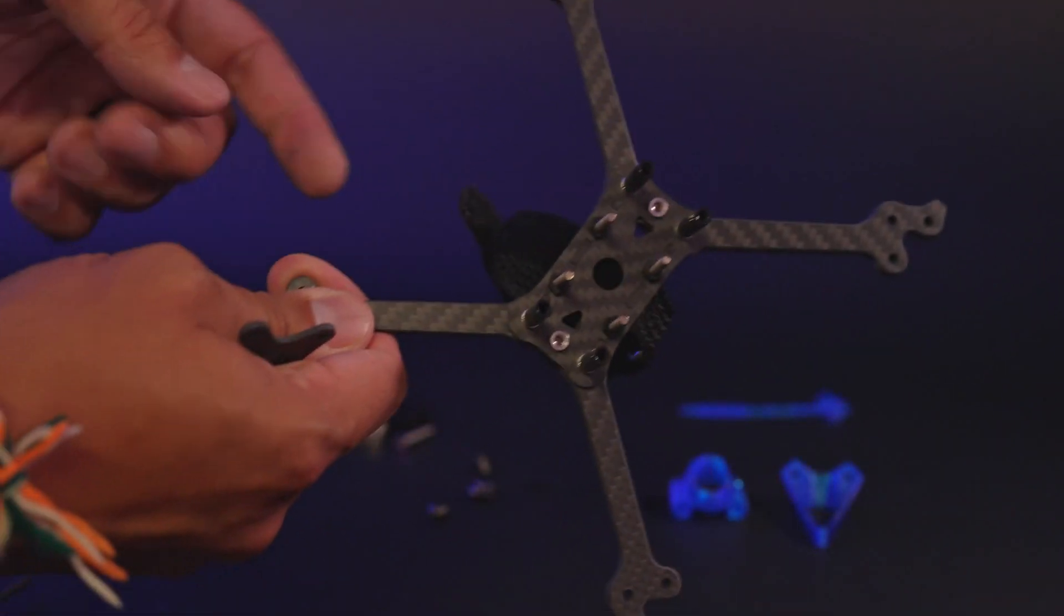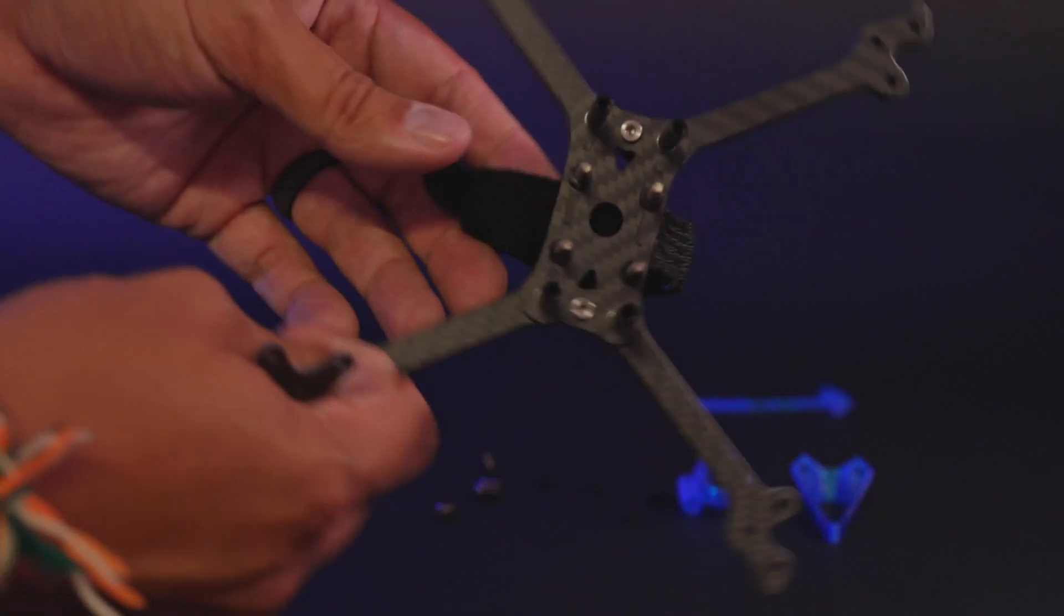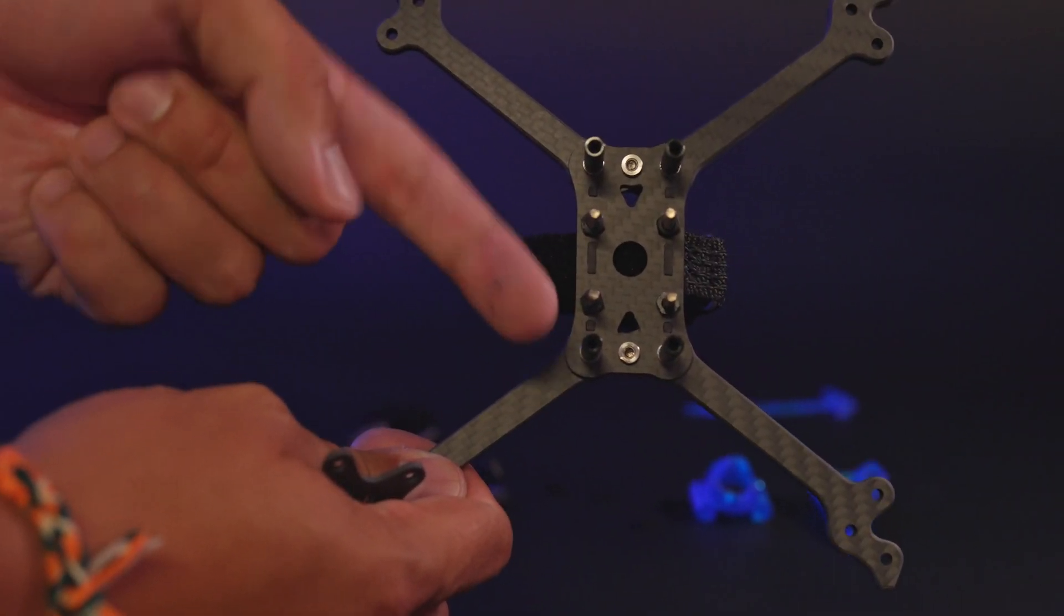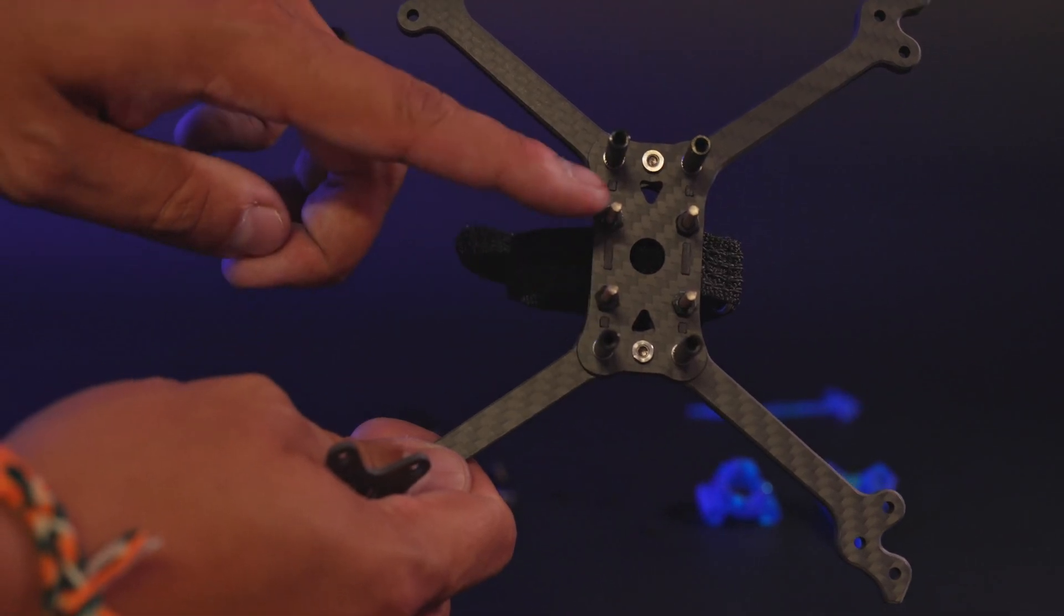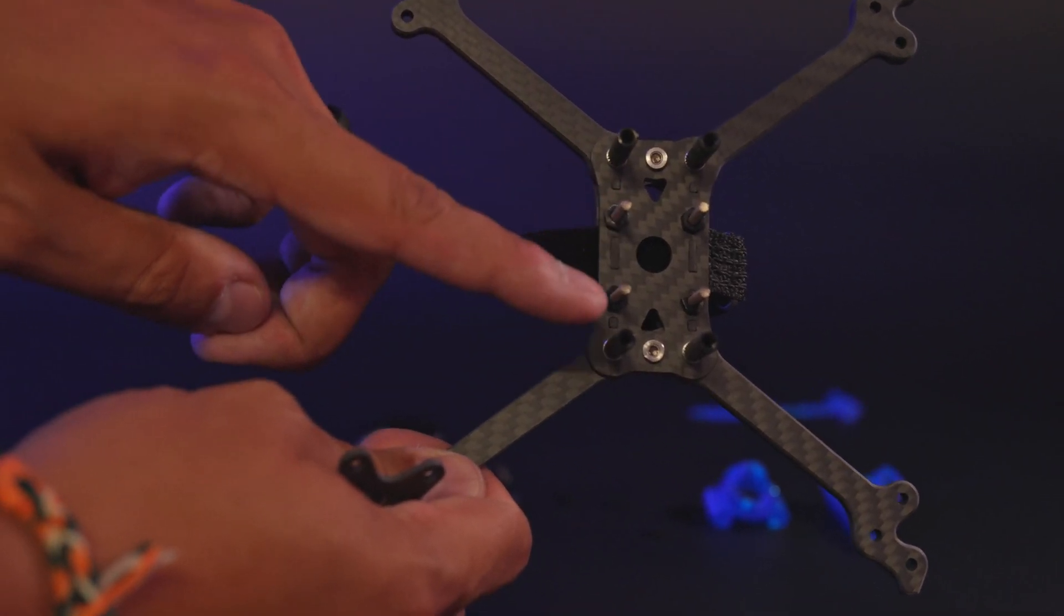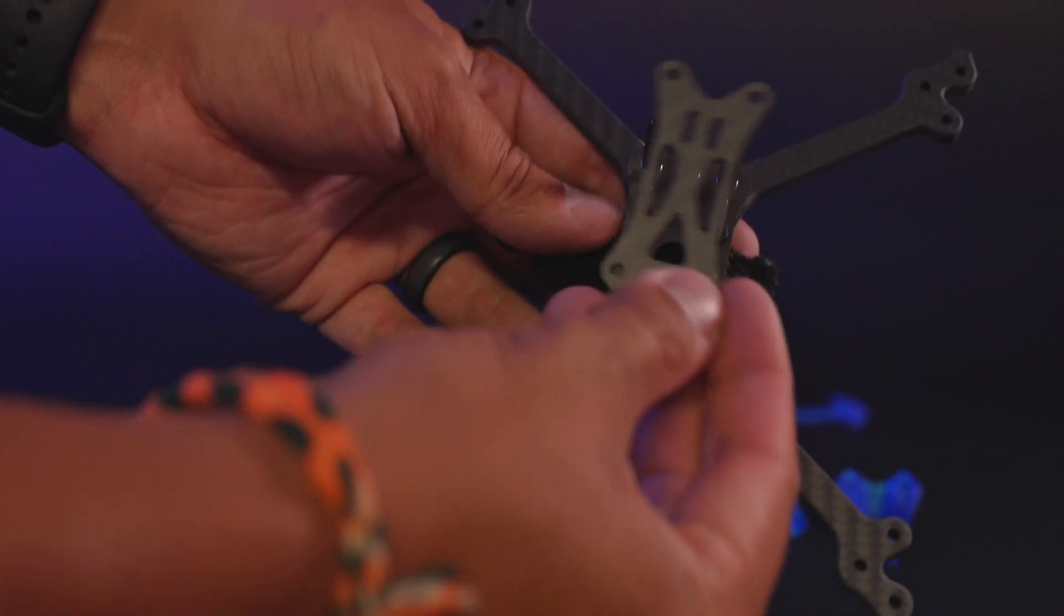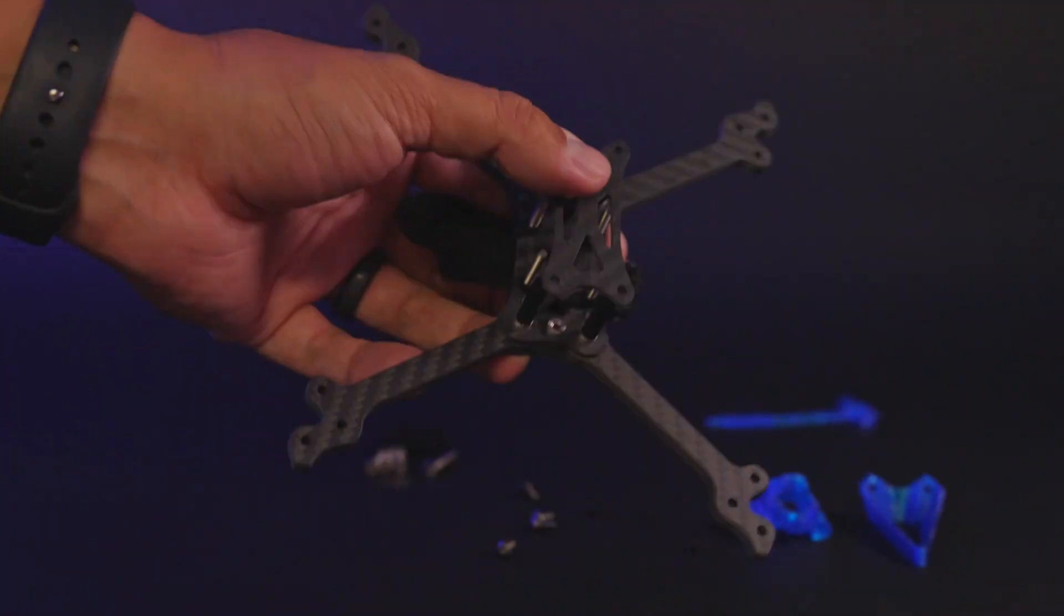And then there is one thing that we need to notice before putting on the top plate, in that there is a shorter distance between the stack screws in the front standoff and a longer distance between the stack screws in the rear standoff. So the top plate front goes towards that shorter distance.